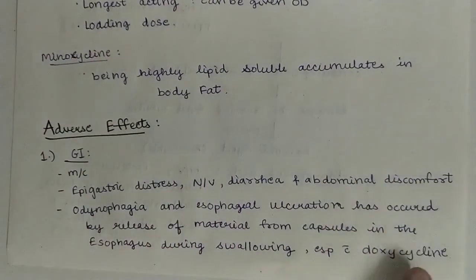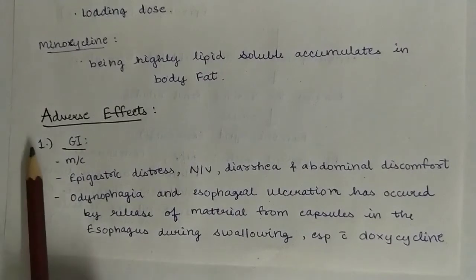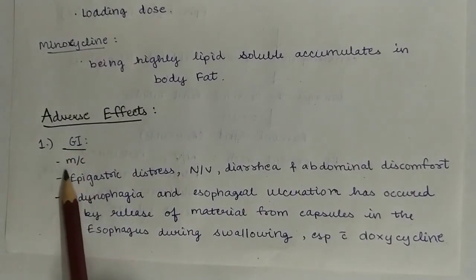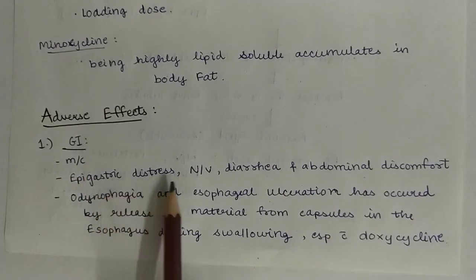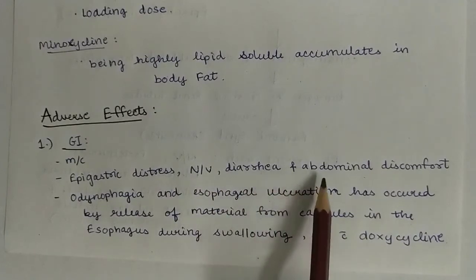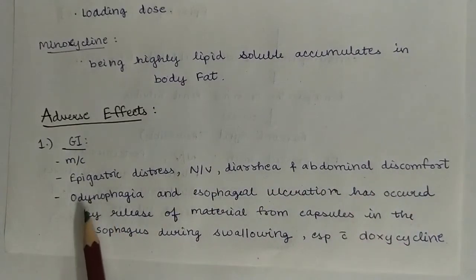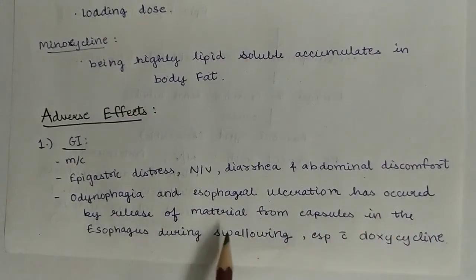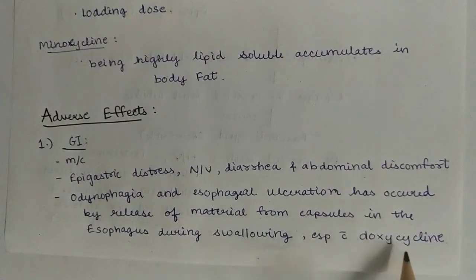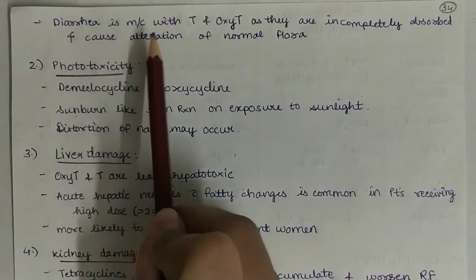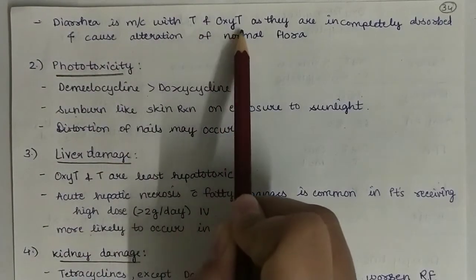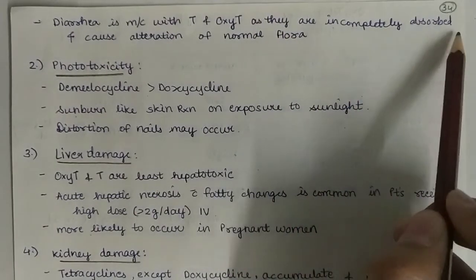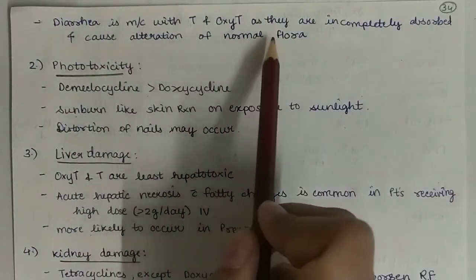Next, adverse effects. First, on the GIT: the most common adverse effects occur on the GIT — epigastric distress, nausea, vomiting, diarrhea, and abdominal discomfort. Odynophagia and esophageal ulceration can occur due to release of material from capsules in the esophagus during swallowing, especially with doxycycline. Diarrhea is more common with tetracycline and oxytetracycline as they are incompletely absorbed and cause alteration of normal flora.